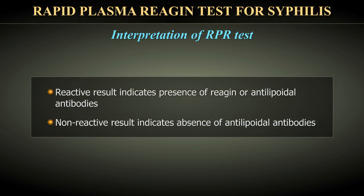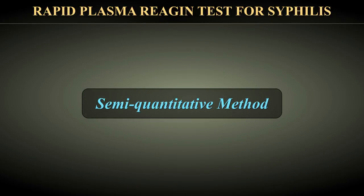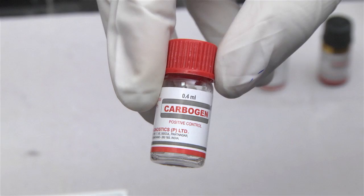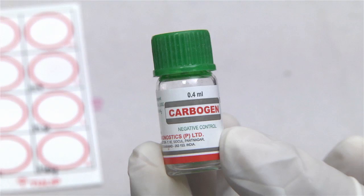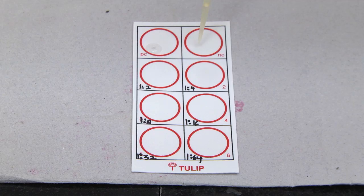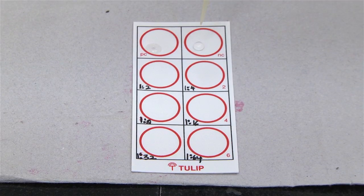A non-reactive result indicates absence of reaginic or antilipoidal antibodies. Semi-quantitative method: place one drop of positive control and one drop of negative control onto their respective circles.